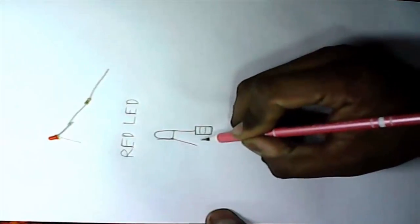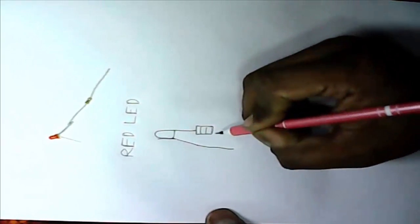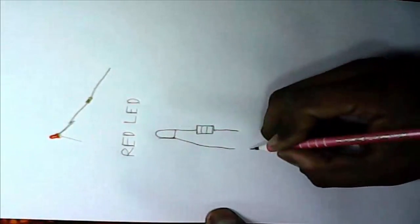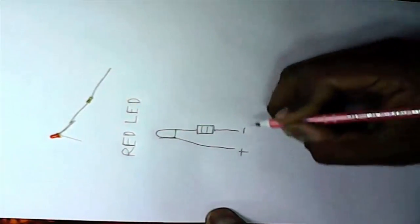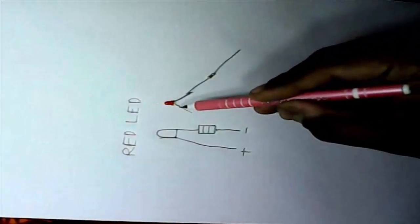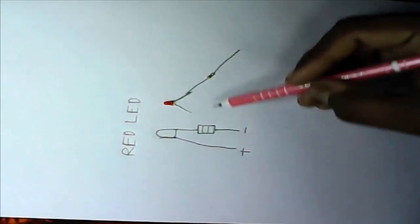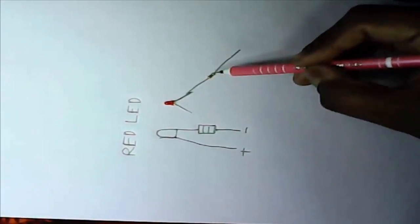This side we join a resistor. This side is minus and this side is plus. This side is plus. And this side is minus. Join to resistor.